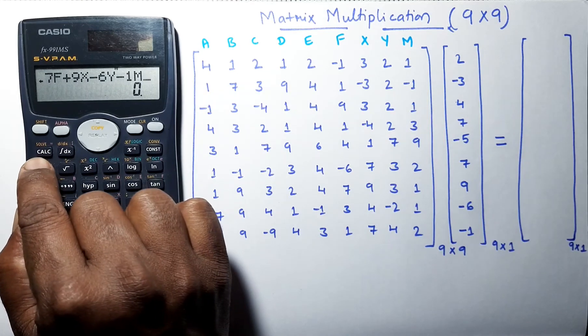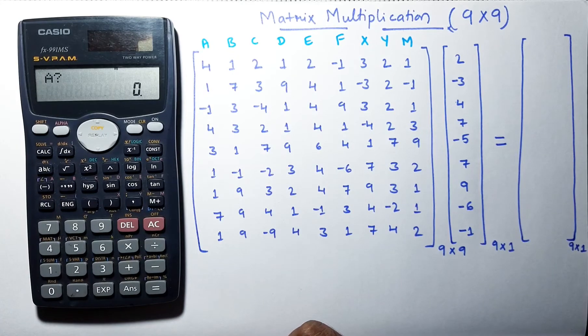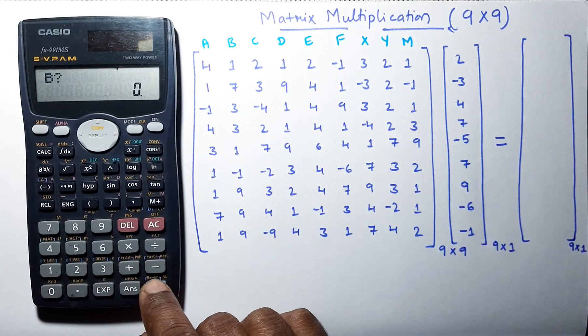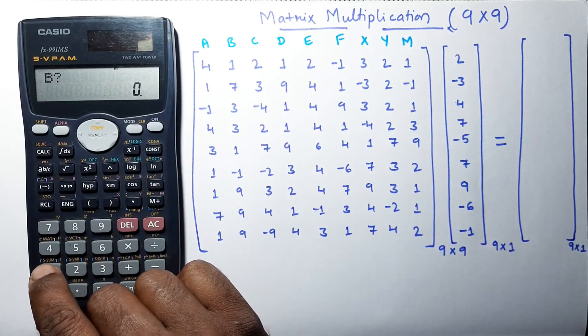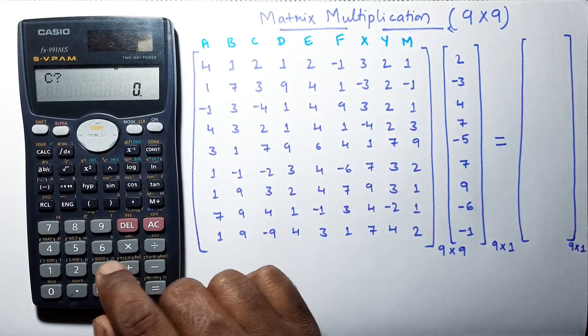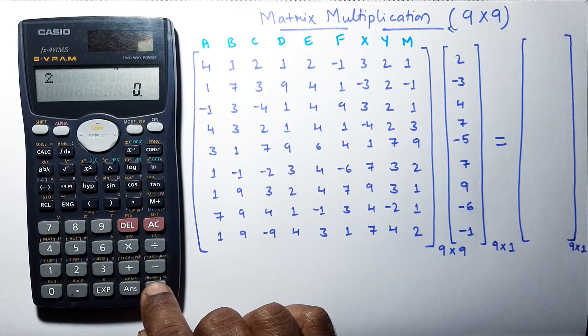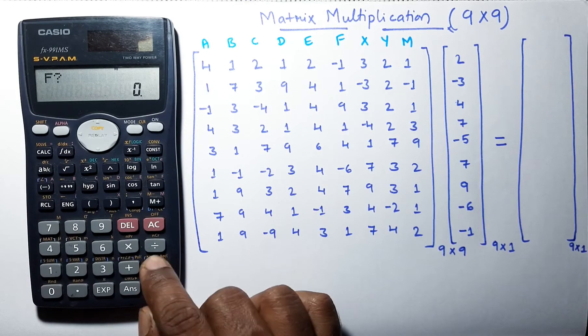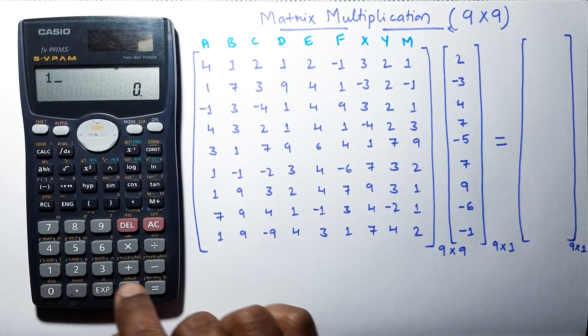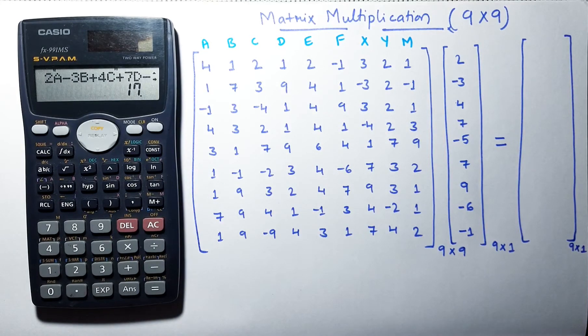Now, we will press this calculate button. When we press this calculate button, it will ask for the values of variables. Now, we have to enter the values of variables which is 4, value of B is 1, value of C is 2, we have to enter all this row. And E is 2, F is minus 1, X is 3, Y is 2, M is 1. Now, we are getting the first answer, which is 17.